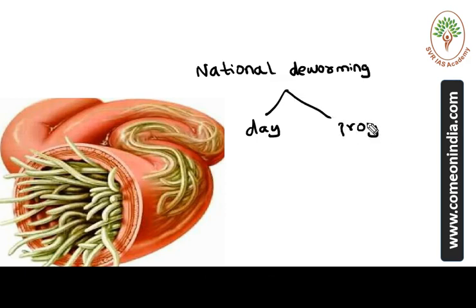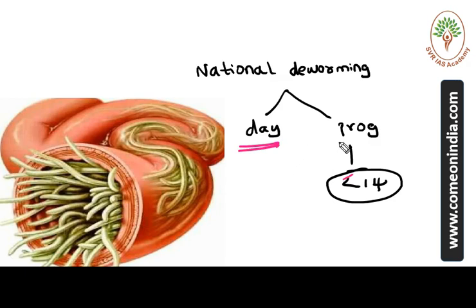Nearly 64 percent of our Indian population under 14 years of age are at high risk of soil-transmitted helminths and other worm infestations. India carries the highest burden of worm infestation.